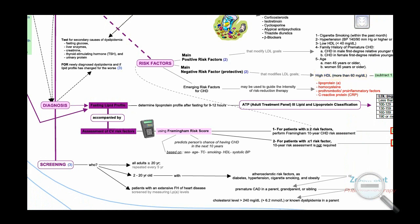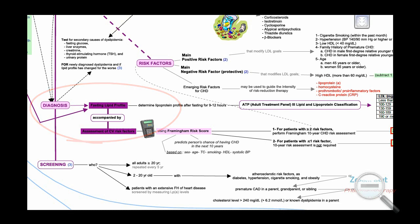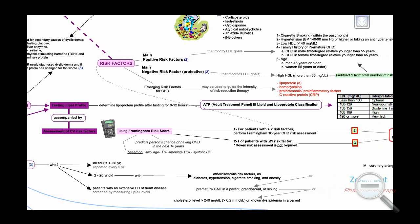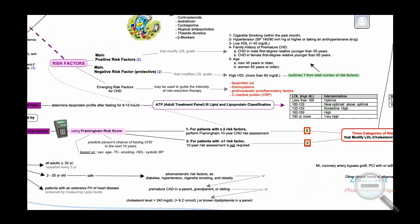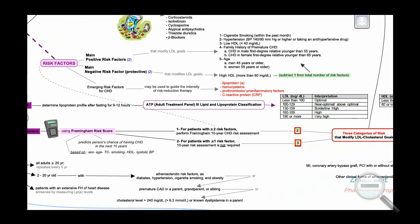Diagnosis of dyslipidemia is based on the fasting lipid profile of the patient, accompanied by assessment of cardiovascular risk factors using the Framingham risk score. The Framingham risk score predicts a person's chance of having coronary heart disease in the next 10 years.